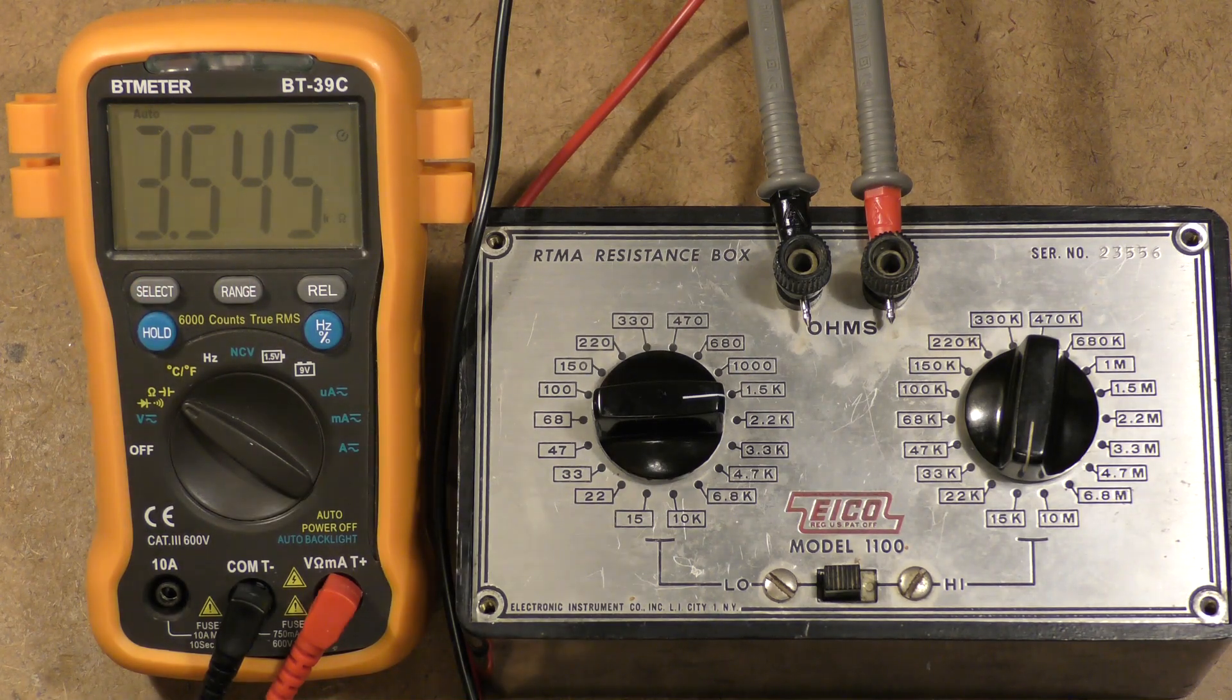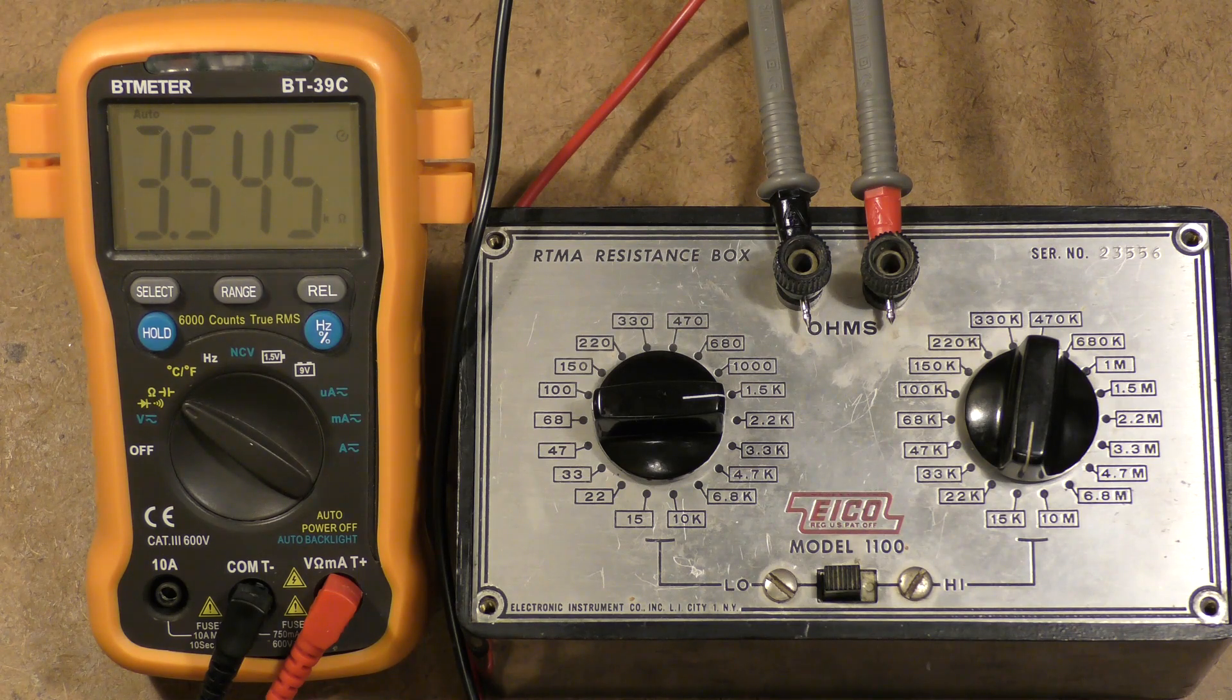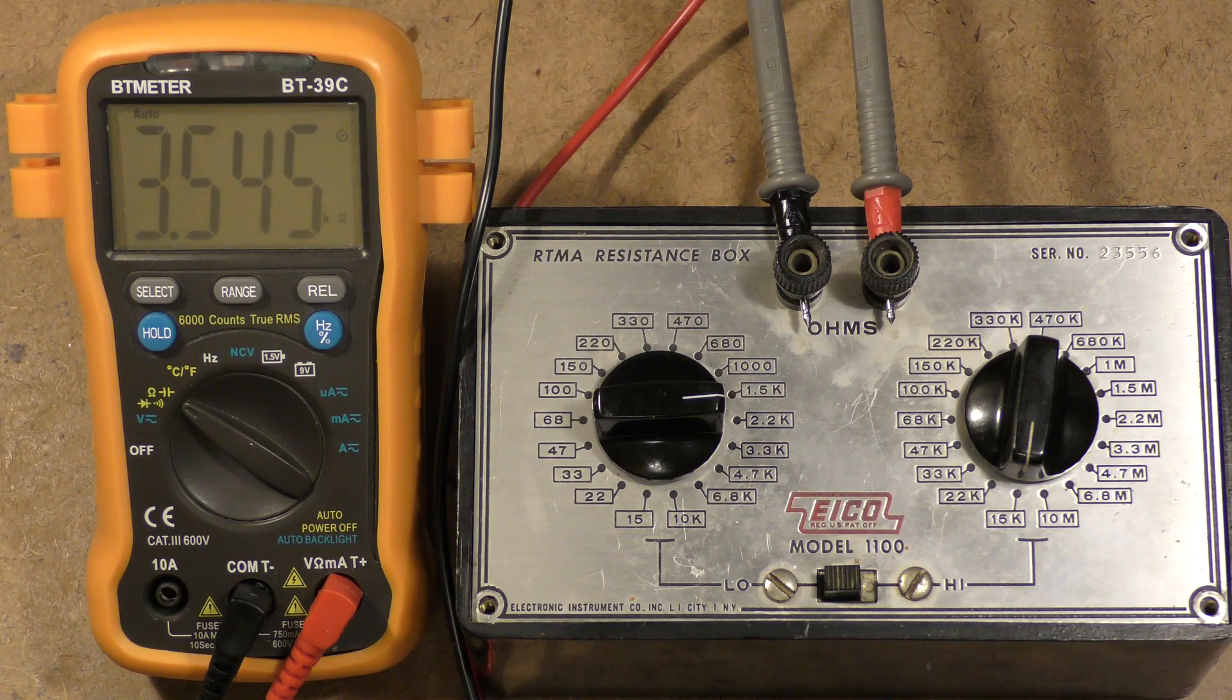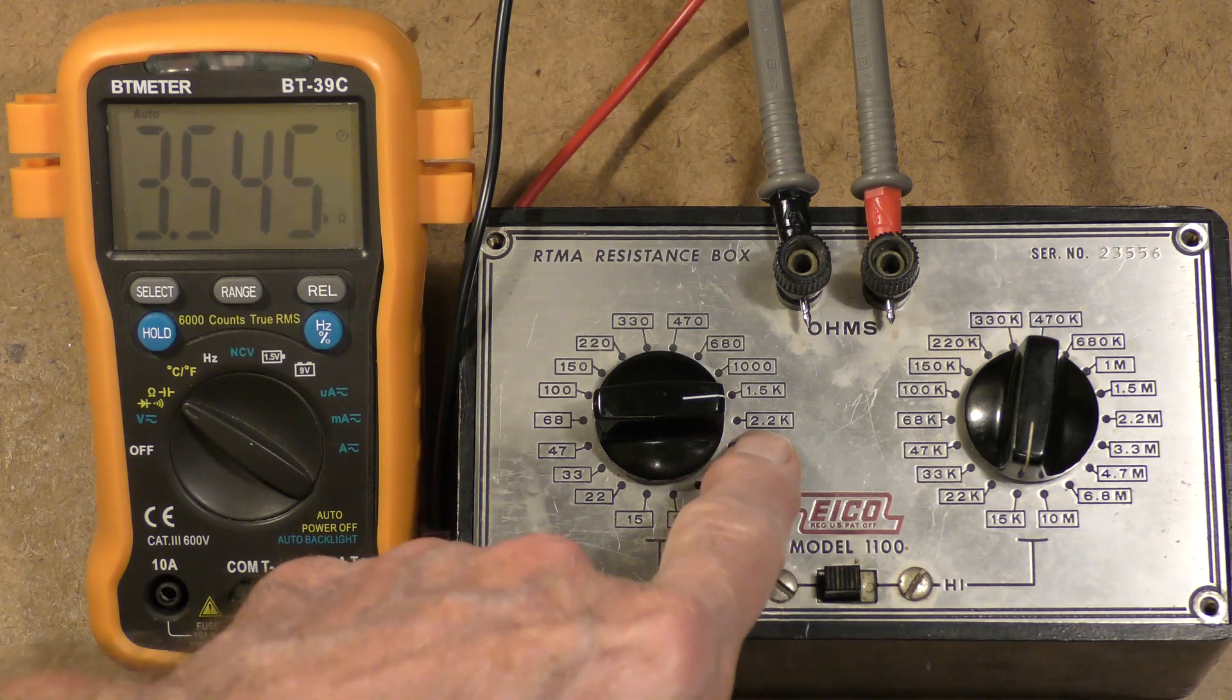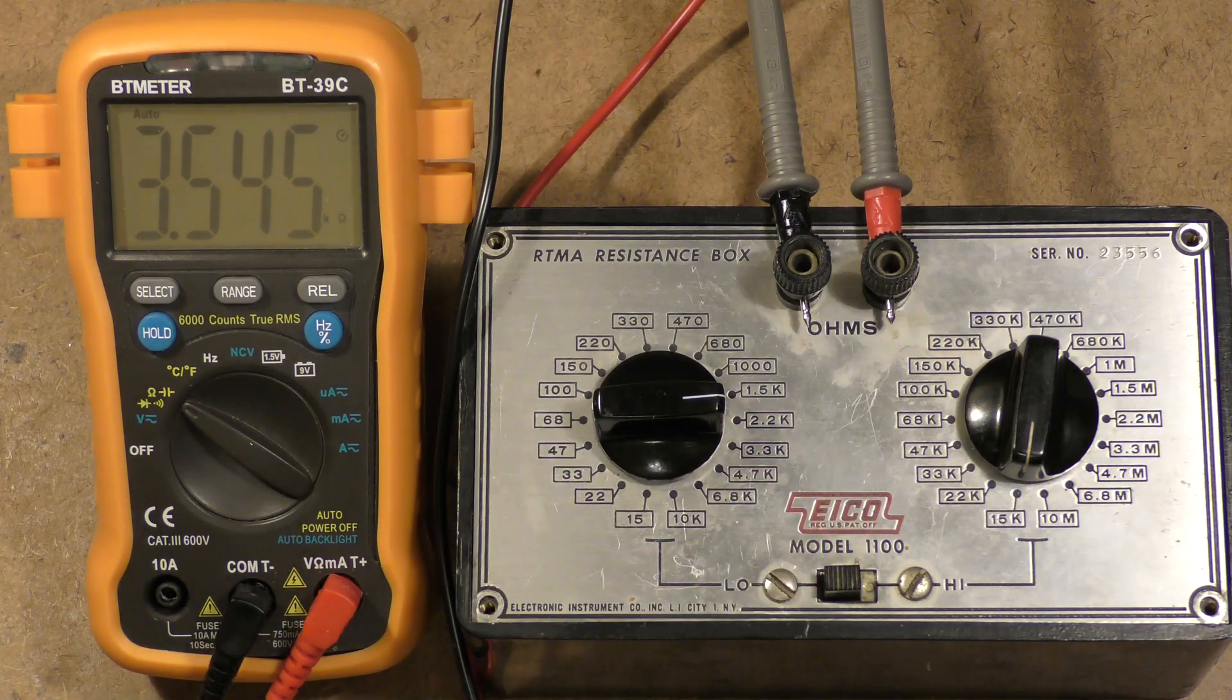So the trick is that since carbon resistors tend to always drift up, unless you overload them and actually burn them out, you can pull them back down to their nominal value very easily. Let me show you how you do that.